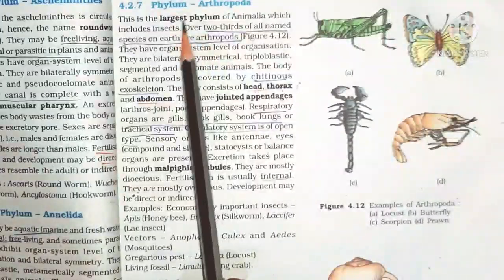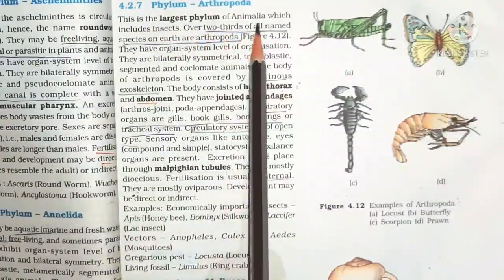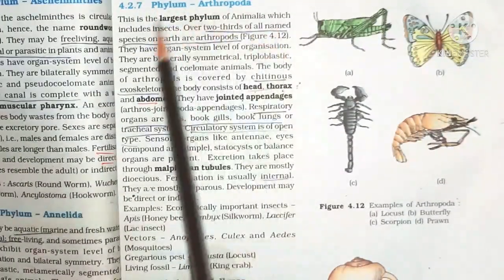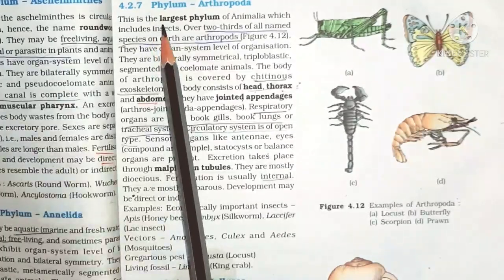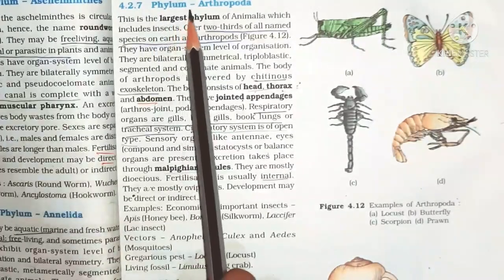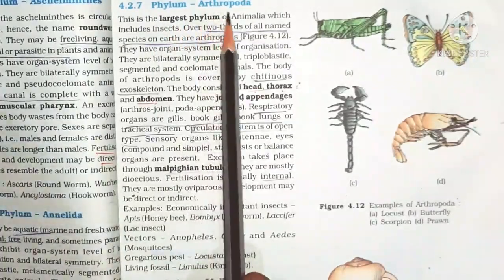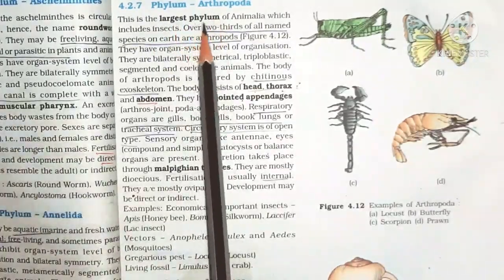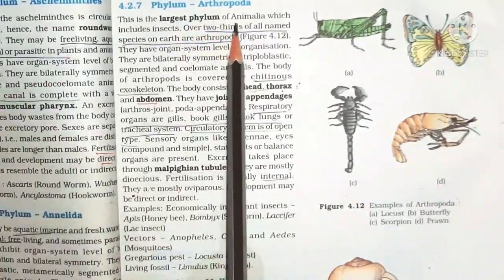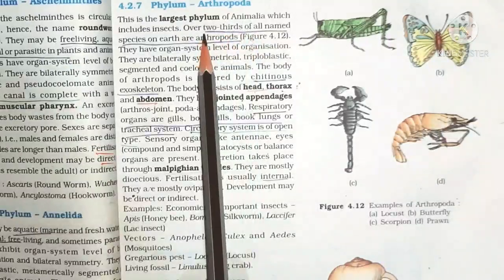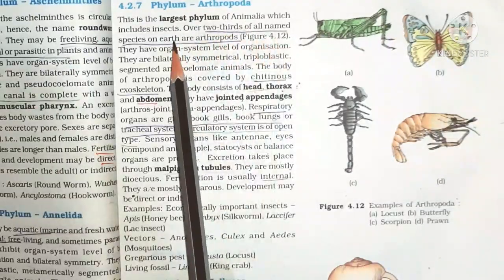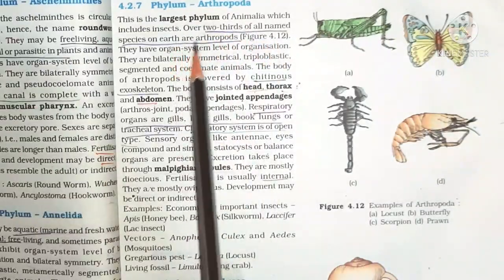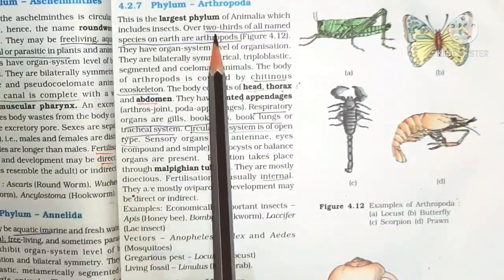Phylum Arthropoda is the largest phylum of Animalia, which includes insects. Over two-thirds of all named species on Earth are arthropods.